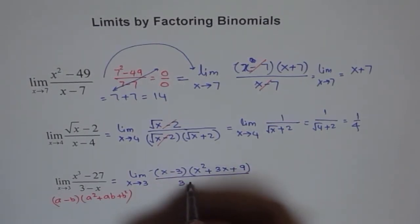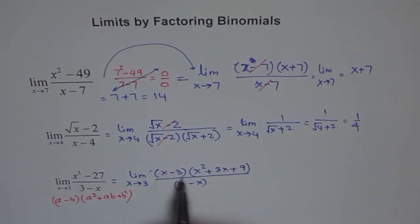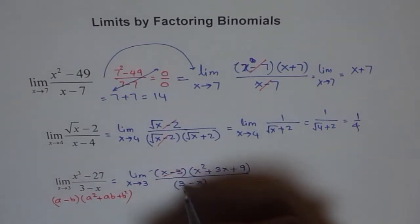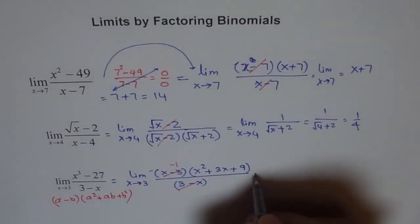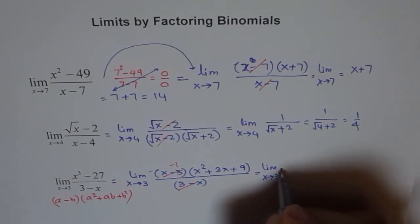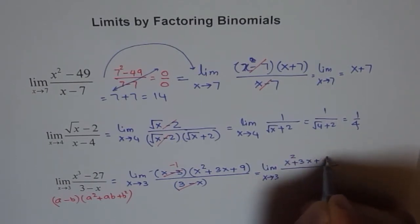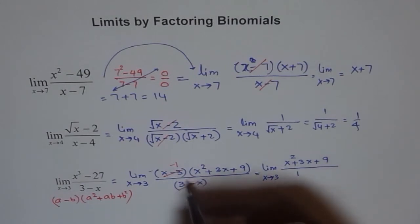So we can write this as x minus 3 times x squared plus 3x plus 3 squared, which is 9, divided by 3 minus x. You see, 3 minus x and x minus 3 are related by minus 1. If I do minus 1 times this, then you get 3 minus x. So they can be cancelled out. So they are common factors, but you get minus 1 this time, not plus 1. So this could be written as limit x approaches 3 and you have x squared plus 3x plus 9 over 1. Is that okay? Because they cancelled out. But this one is minus 1.